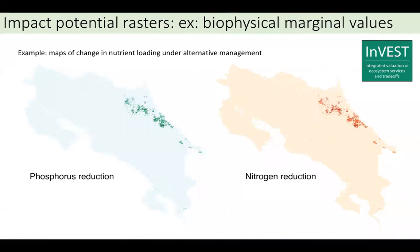Then you generate impact potential rasters, sometimes called marginal value rasters. These specify: if you do a certain activity in this location, what will be the biophysical change expected for the service of interest? Here are maps for nutrient loading to streams, calculated using the InVEST tools. But any tool that can generate rasters estimating marginal values also works — Root does not depend on using InVEST for the service modeling.